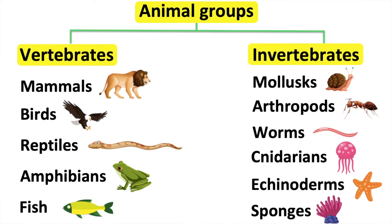The six groups are mollusks, arthropods, worms, cnidarians, echinoderms, and sponges. There are many different types of mollusks. Some have shells for protection and others don't. For example, snails, squid, and oysters.